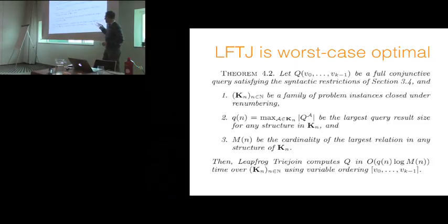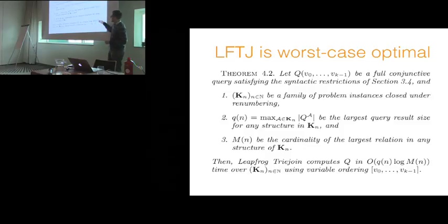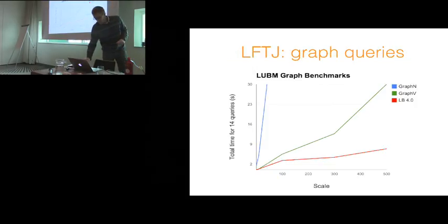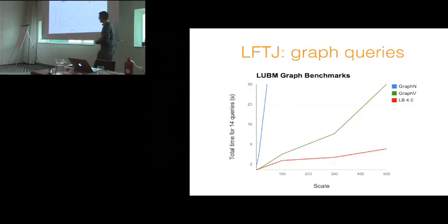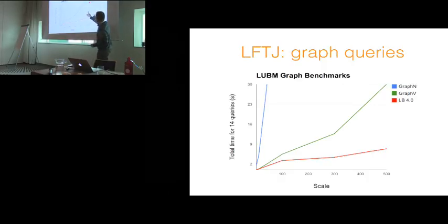The gist of worst-case optimality is that if you have a query with restrictions on the sizes of the predicates and their projections, the running time of this algorithm will be at most the output size of the worst database you can devise that satisfies those cardinality constraints. In practice it does very well on complex queries, such as graph queries. Here's an example benchmark on a graph database: the x-axis is graph size, the y-axis is running time for 14 queries. The blue and green lines are specialized graph databases for these computations, and the red line is leapfrog tree join's performance — it looks asymptotically faster than those other databases.